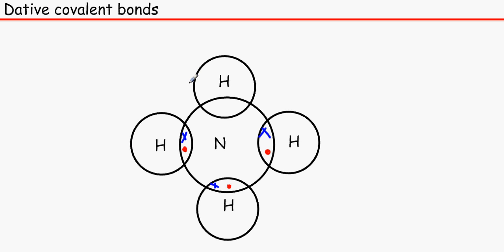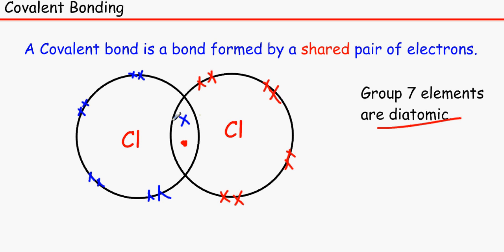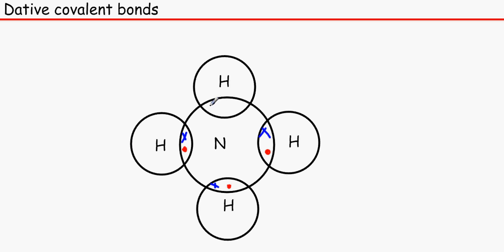A dative covalent bond is a bond where a shared pair of electrons has been provided by one of the atoms. This one had one electron being shared by each of them. This one on the other hand has got 2 X's. That means it's being shared by this Nitrogen.